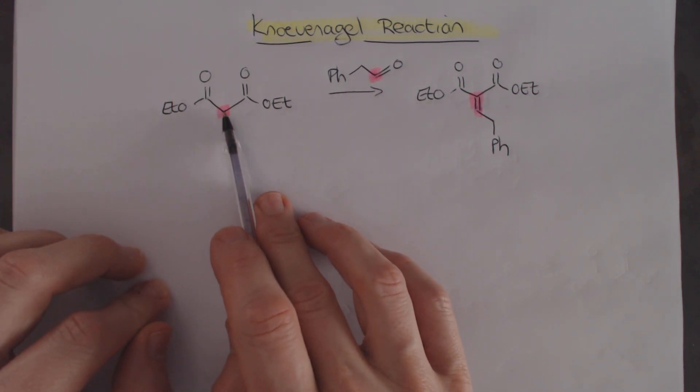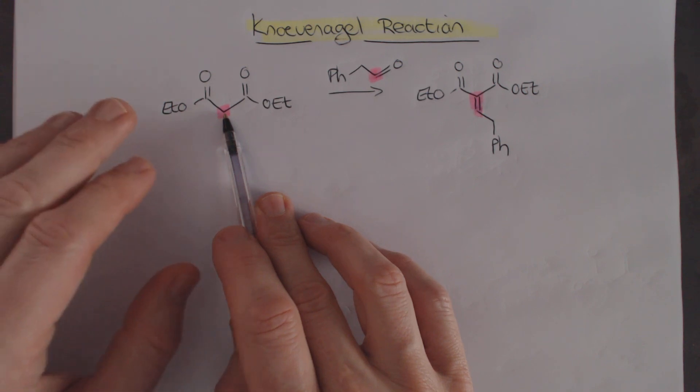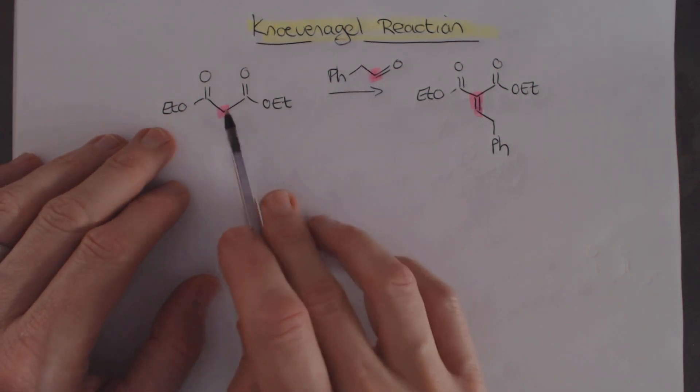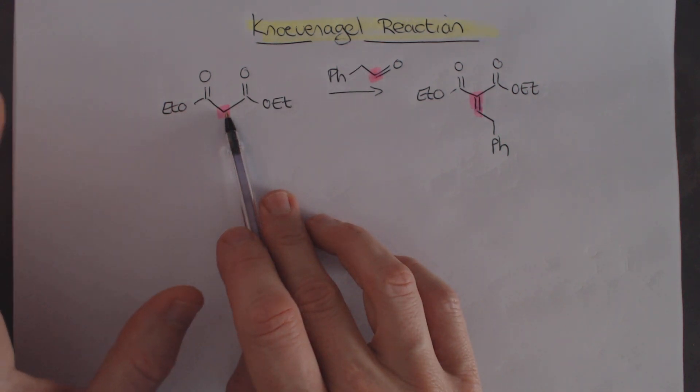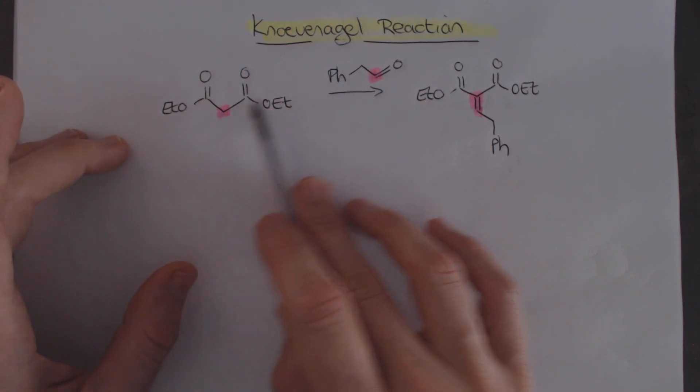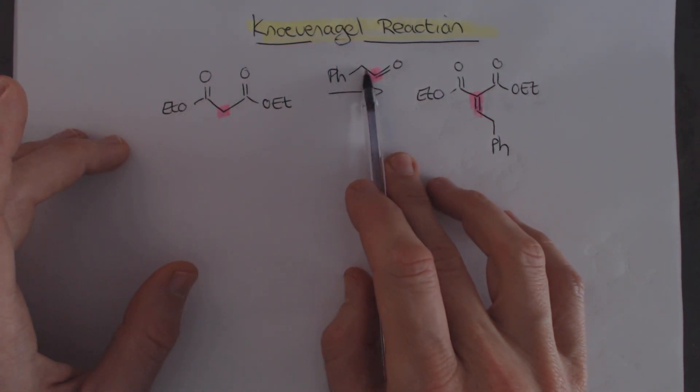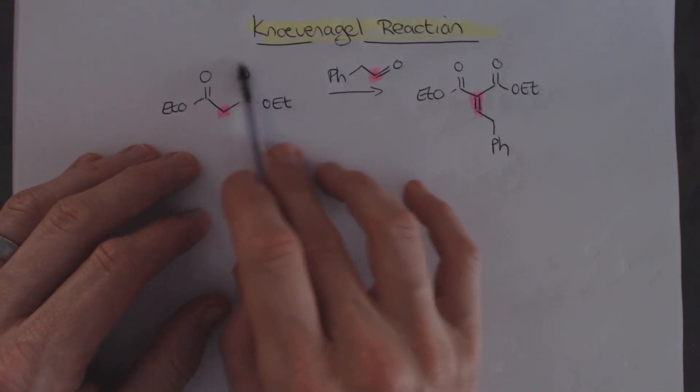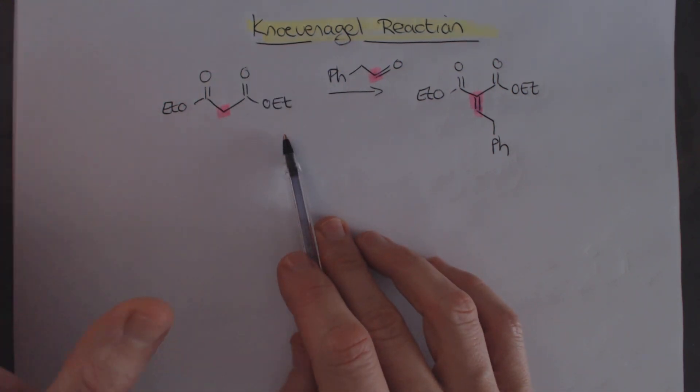It's because the pKa of this carbon that we want to actually generate the enolate on is very different from the pKa of this one over there. This one is sitting in the region of 10 and this one's sitting in the region of 20 to 25. So there's a huge difference in terms of their pKa value. So in this reaction we wouldn't use sodium hydroxide because we would just deprotonate there. We could use sodium ethoxide to get it to work.